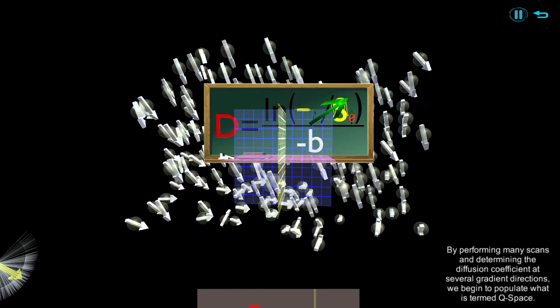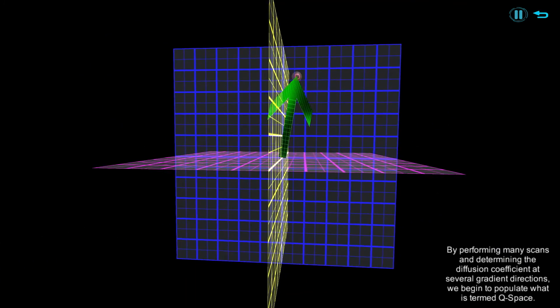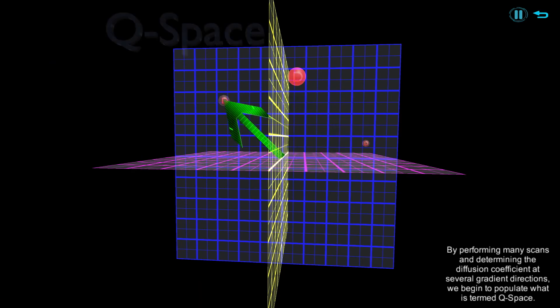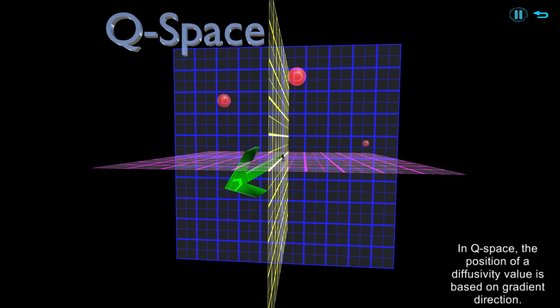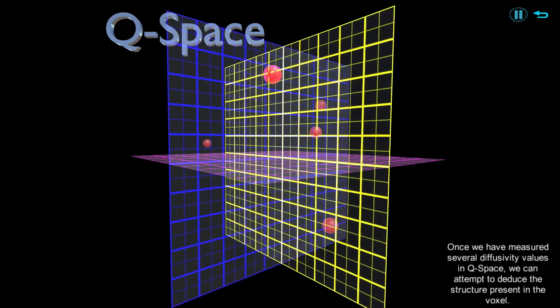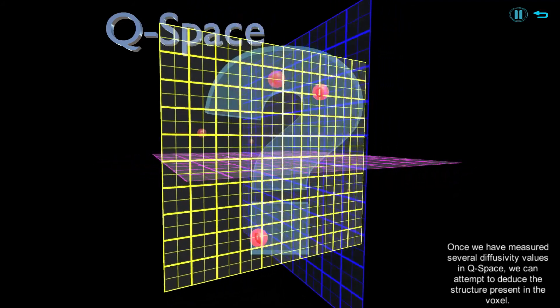By performing many scans and determining the diffusion coefficient at several gradient directions, we begin to populate what is termed q-space. In q-space, the position of a diffusivity value is based on gradient direction. Once we have measured several diffusivity values in q-space, we can attempt to deduce the structure present in the voxel.